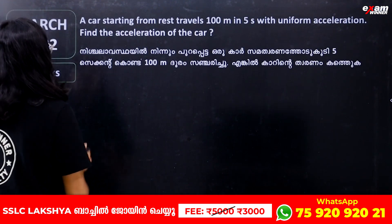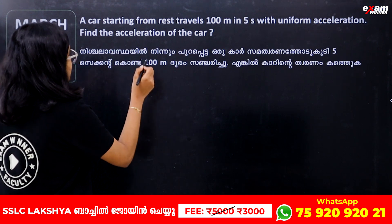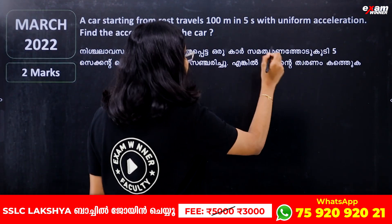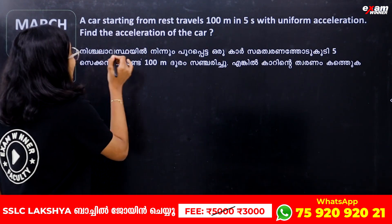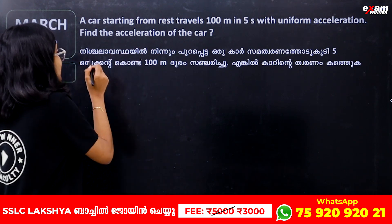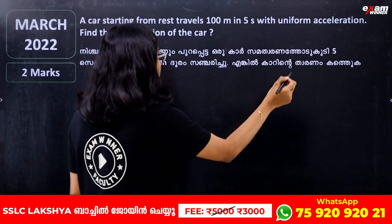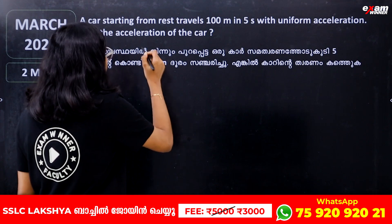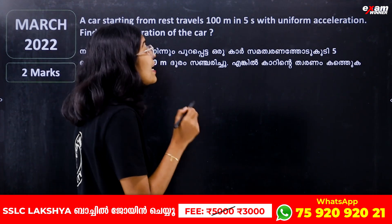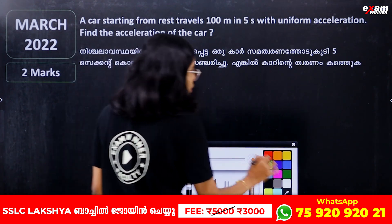First question. A car, starting from rest, travels 100 meters in 5 seconds with uniform acceleration. Find the acceleration of the car.